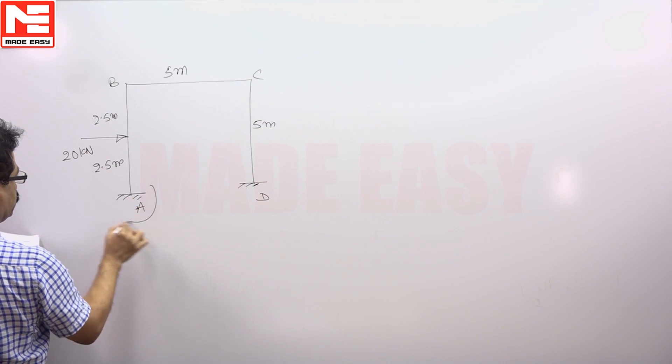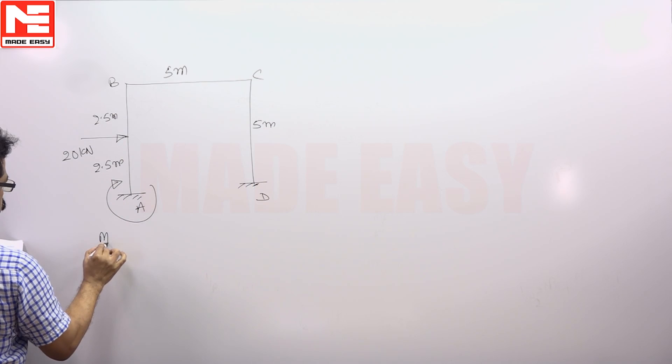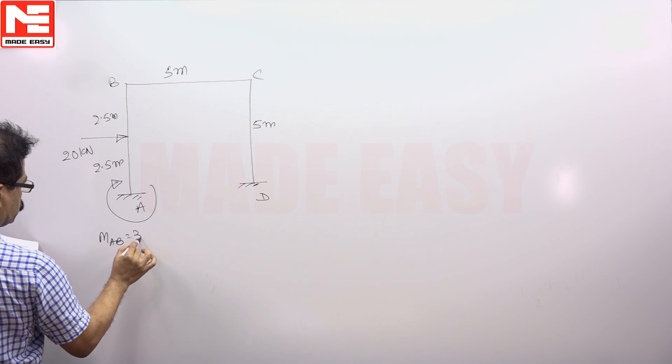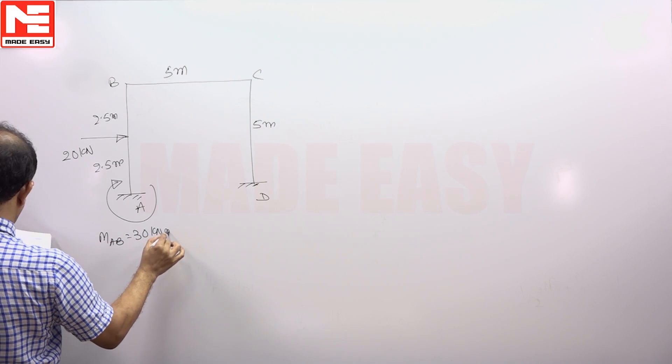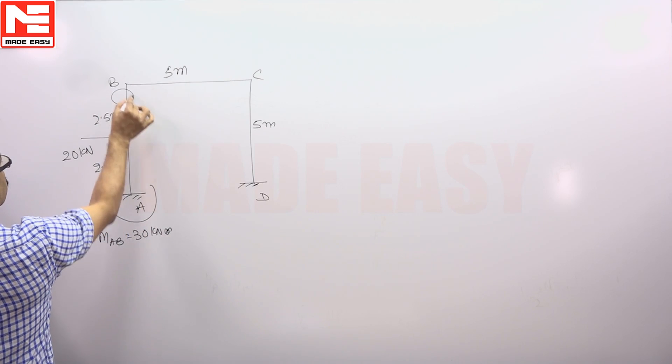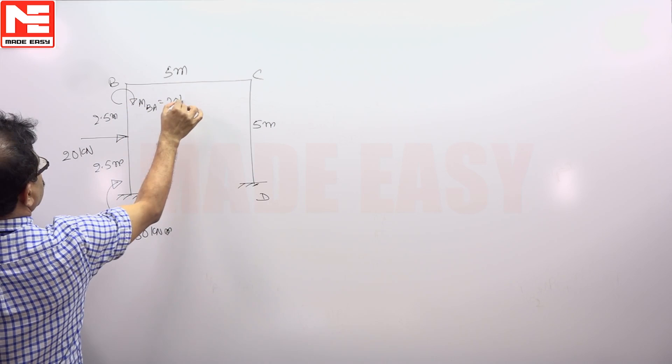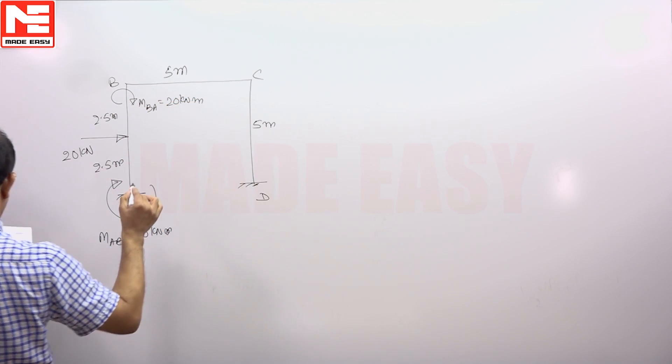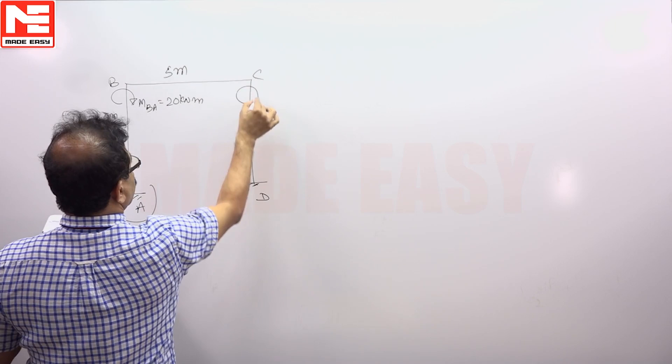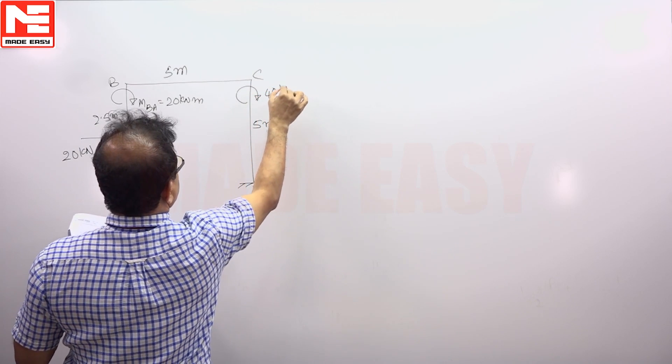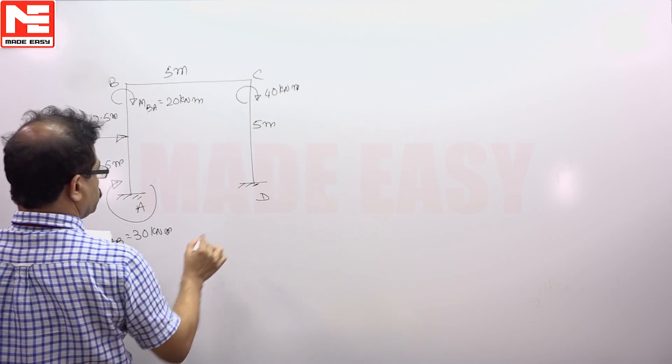M_AB is plus 30. Then M_BA is plus 20. Then M_CD is plus 40, 40 kilonewton meters.